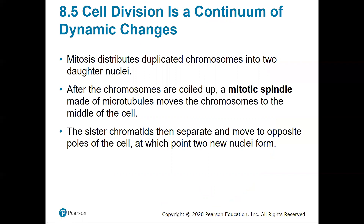Cell division is a continuous change from a singular nucleus to a copy of that, and then the cell will split apart. Mitosis distributes duplicated chromosomes into two daughter nuclei. After the chromosomes are coiled up, a mitotic spindle made of microtubules moves the chromosomes to the middle of the cell. The sister chromatids then separate and move to opposite poles of the cell, at which point two new nuclei can form.